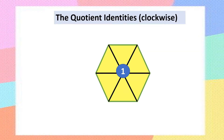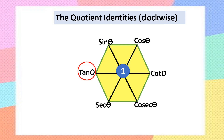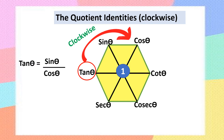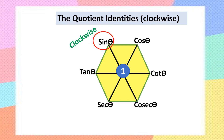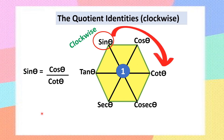Now the first formula — the quotient identities — going in the clockwise direction. Starting from tan theta: tan theta equals sin theta divided by cos theta. Moving to sin theta: sin theta equals cos theta divided by cot theta. Whatever ratio is circled is the subject; the next two in clockwise order form the numerator and denominator.